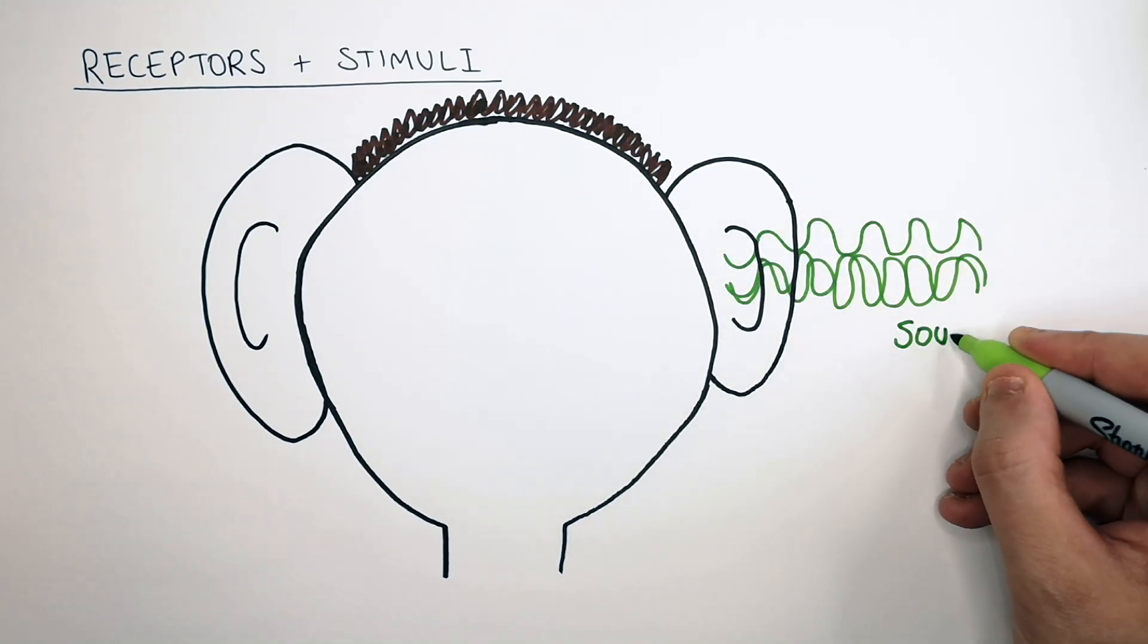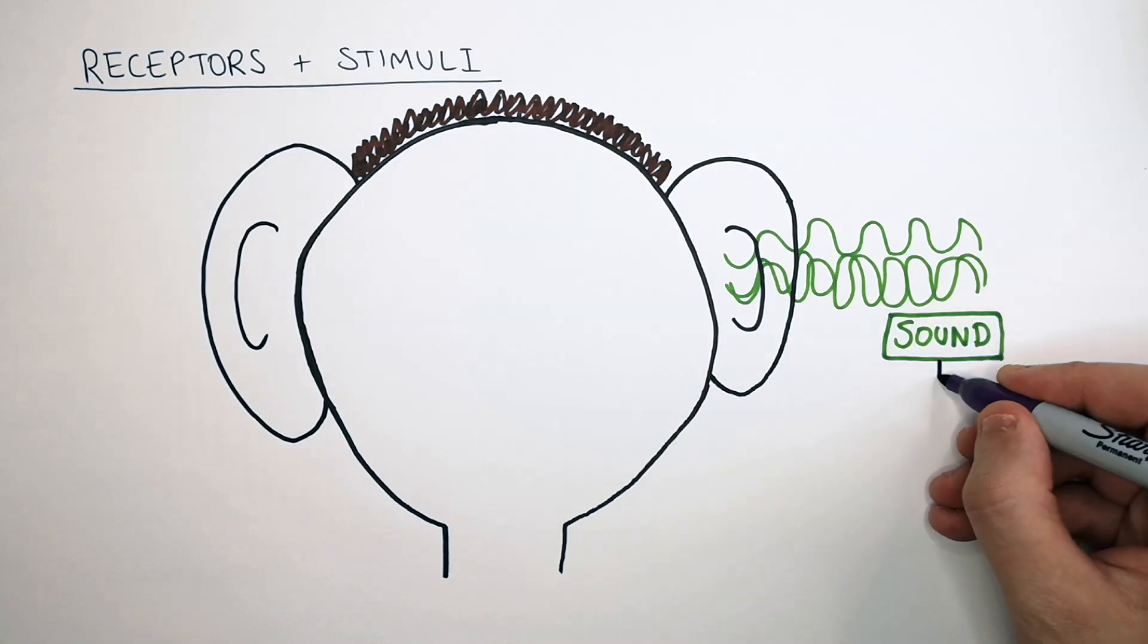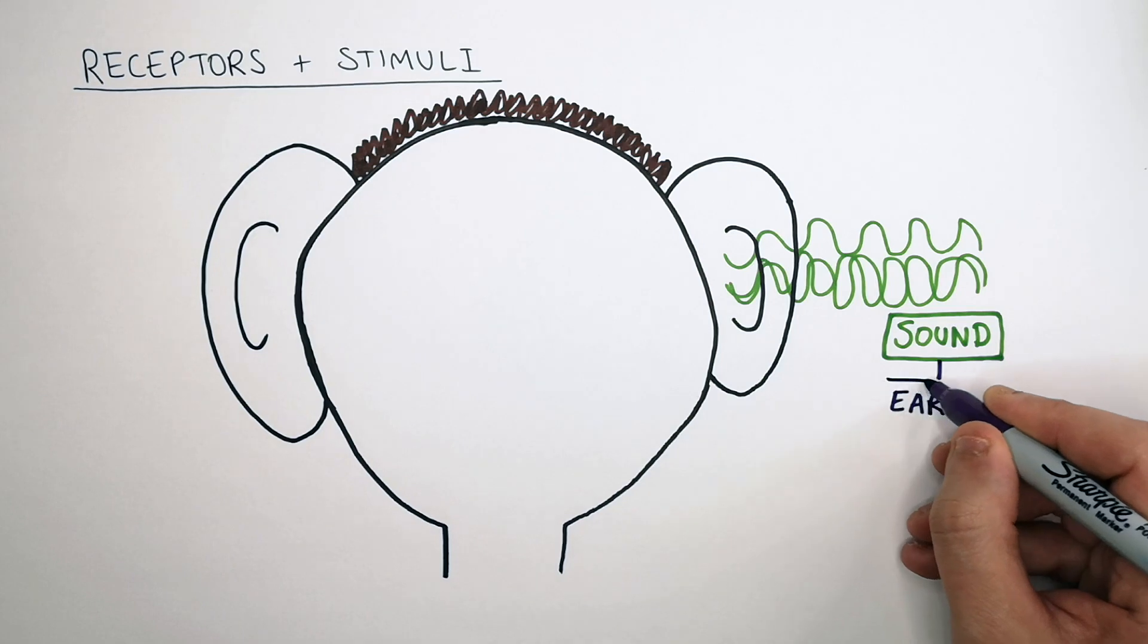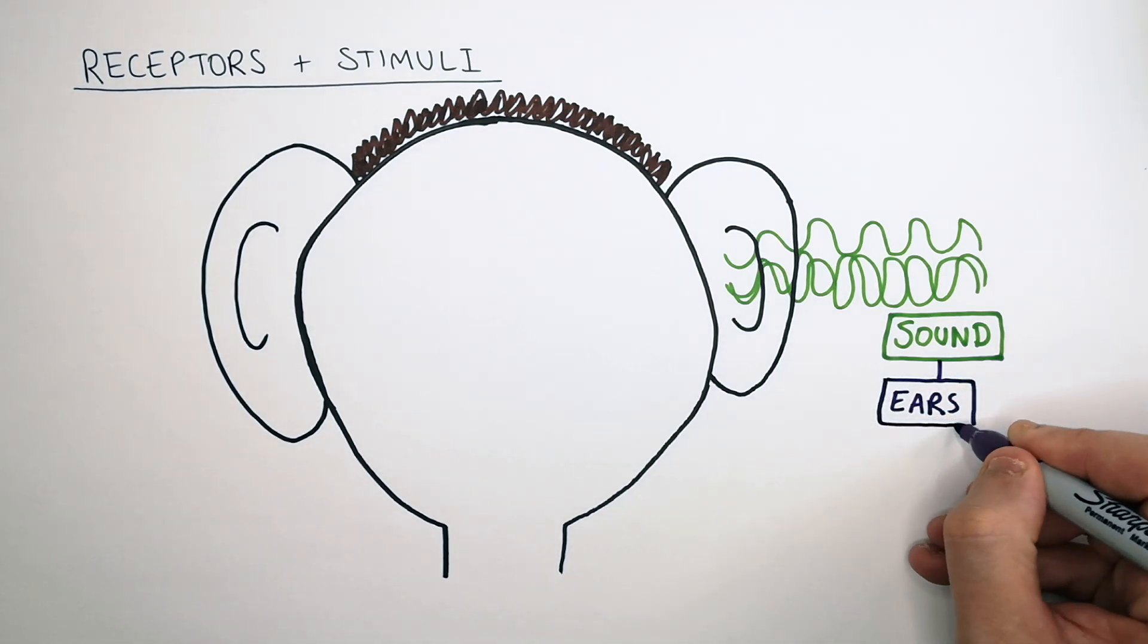Sound is the stimulus. Remember, sound is the stimulus and your ears are the receptors. So you've got receptor cells in your ears that detect the stimulus sound.